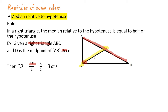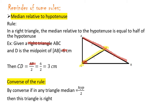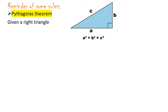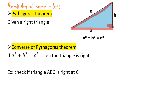The second rule is about Pythagoras' theorem, given a right triangle. Pythagoras applies only to right triangles. The rule is: A squared plus B squared equals C squared, where C squared is the hypotenuse. So the sum of the squares of the two legs must equal the square of the hypotenuse.